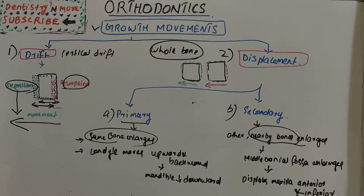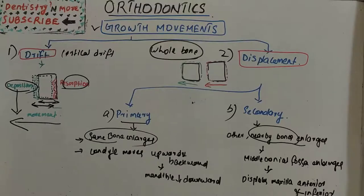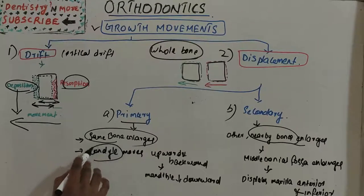In primary displacement, movement can be either in the direction of bone deposition or in the direction of bone resorption — both can happen. As a bone enlarges, it is carried away from the adjacent bone, and growth remodeling takes place to maintain contact.